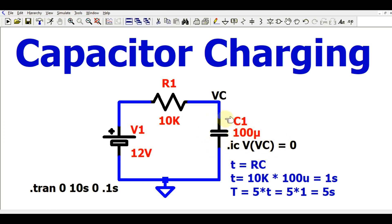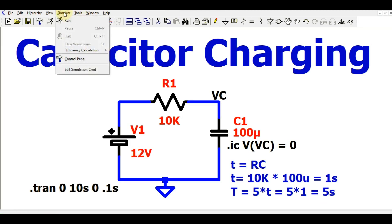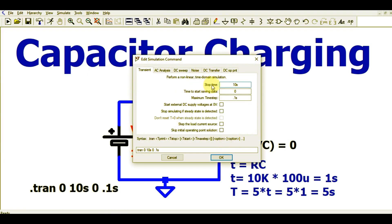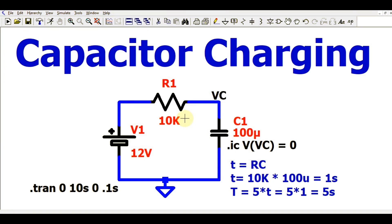Since we know that T equals 5 seconds, to run the transient analysis I will go to Simulate, Edit Simulation Command, and write a stop time of 10 seconds with a maximum step size of 0.1. Everything is now set.